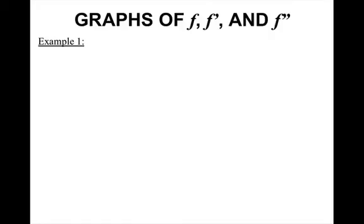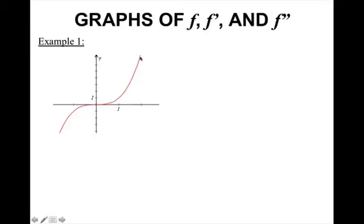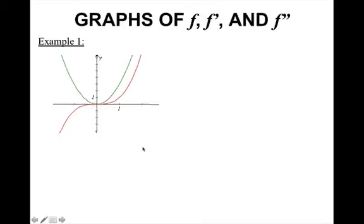Now we're going to look at graphs of f, f prime, and f double prime. In our first example, we have our f function. To sketch the derivative, we always look for horizontal tangent lines first. We have a horizontal tangent line at x equals 0, so the derivative graph is going to be at 0, 0. To the left, we have positive tangent line slopes — starting fairly steep and getting closer to 0 — so the graph starts off fairly high in the positive direction and comes down to 0. Then after the horizontal tangent line, slopes start flat and get steeper but stay positive, so the derivative stays above the x-axis.